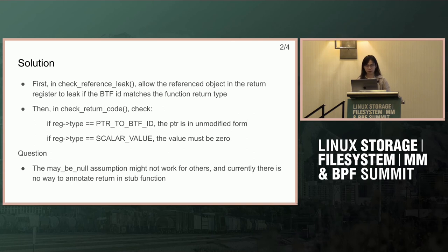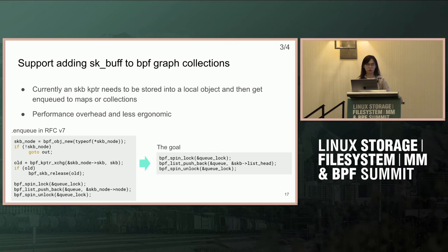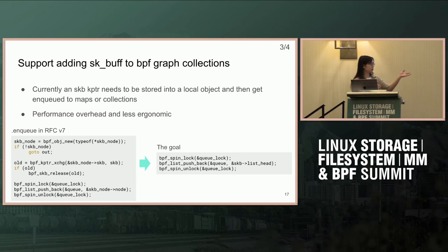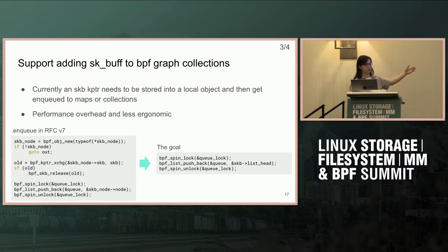The second part is to support adding SKBs to BPF graph collections directly. This is for two reasons: performance overhead and ergonomics. If we look at enqueue in v7, because we cannot add SKBs into kernel objects in BPF list directly, we need to first allocate a local object, exchange the key pointer into the local object, and then add that local object to the BPF list. That's a memory allocation in the fast path, which is not ideal. There's also a lot of code just to enqueue.